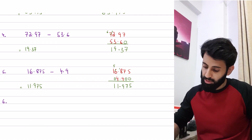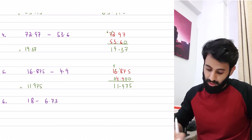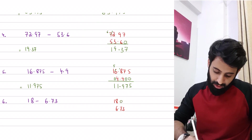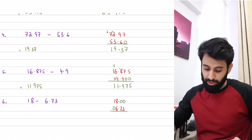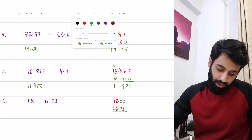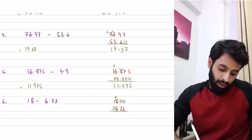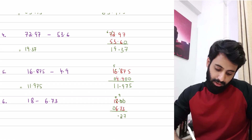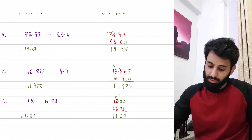One final example — an important case: 18 minus 6.73. Write 18 with a decimal point, then 6.73 aligned below, filling missing places with 0. You can't do 0 minus 3, so start the carrying process: reduce 8 to 7, give 1 to the first 0 making it 10; reduce 10 to 9, give 1 to the next 0 making it 10; 10 minus 3 is 7; 9 minus 7 is 2; 7 minus 6 is 1; 1 minus 0 is 1. The answer is 11.27.